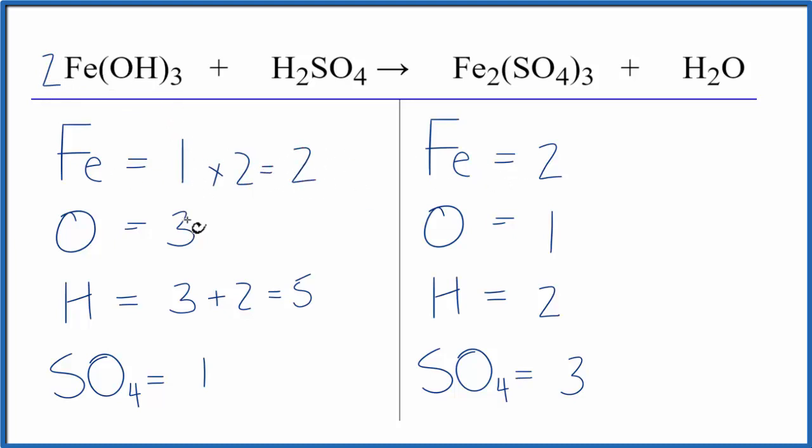Then we need to update our hydrogens and our oxygens. So for oxygens, we have three times one, that's three, times the two, six oxygens. Hydrogens, we have three times one, times two, six, plus we have the two here, so we have eight hydrogens.